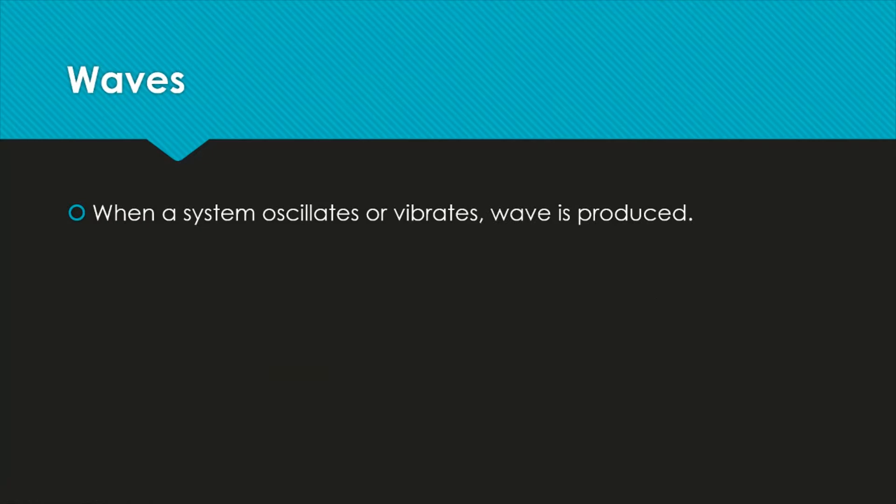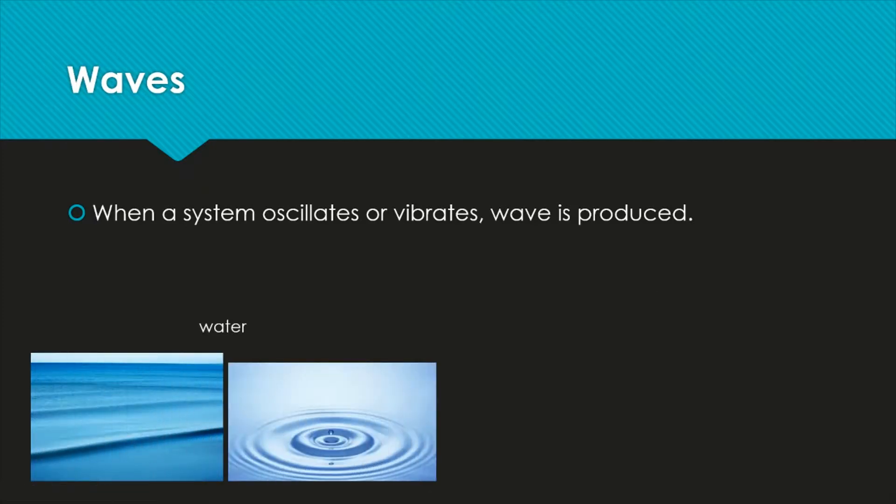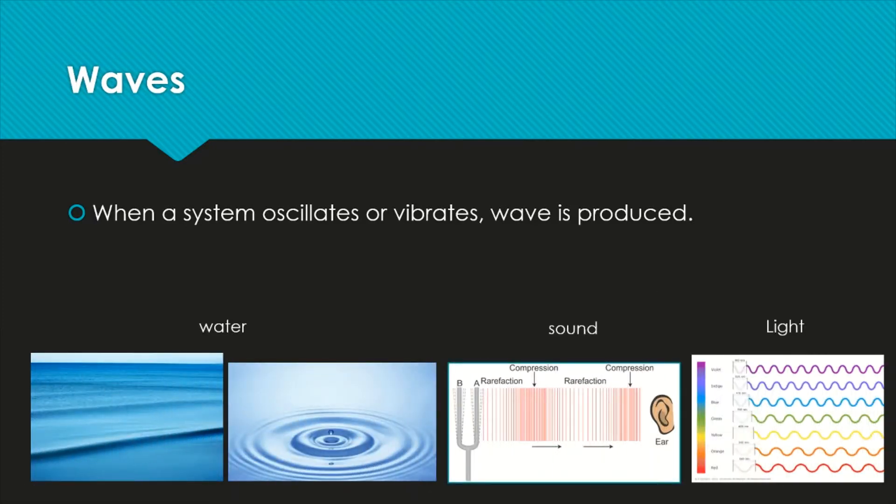What is wave? When a system, an object or a body oscillates or vibrates, wave is produced. We are going to learn water wave, sound wave, and light wave.